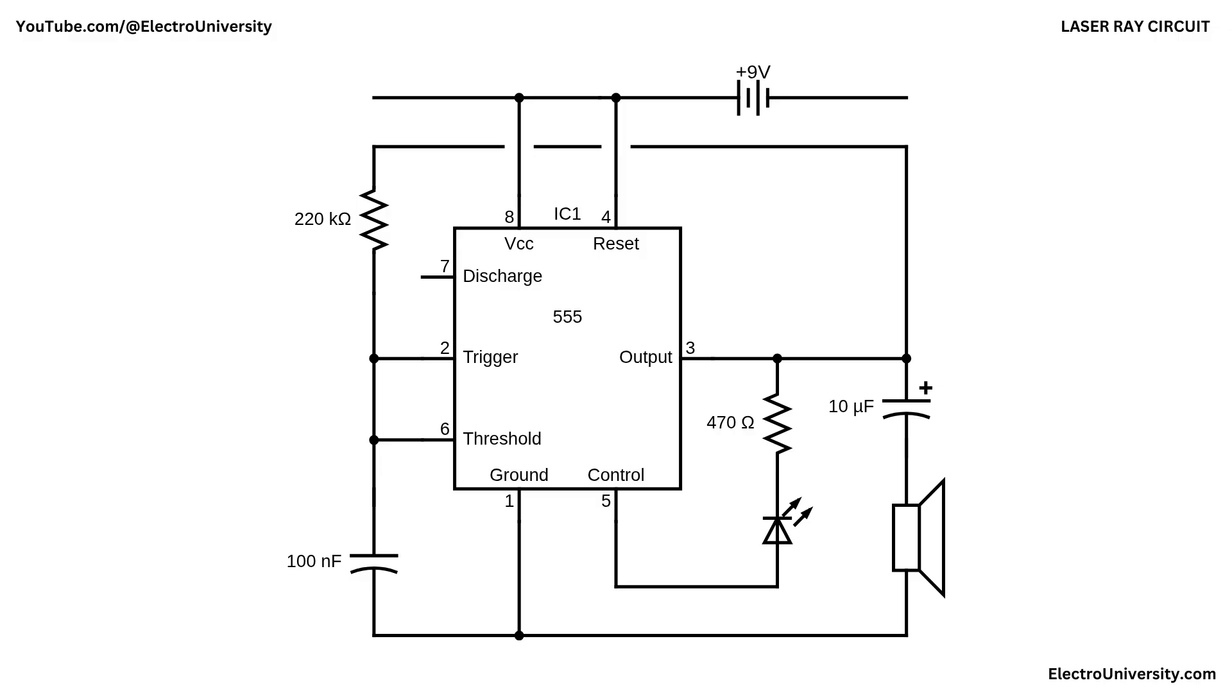The frequency of the oscillation is determined by the 220 kilo ohm resistor and the 100 nanofarad capacitor. Based on the standard formula for a 555 timer in astable mode, the output frequency is around 65 Hz, which gives a low pulsing sound. The combination of blinking light and matching audio makes this circuit ideal for fun DIY projects that mimic a laser ray.